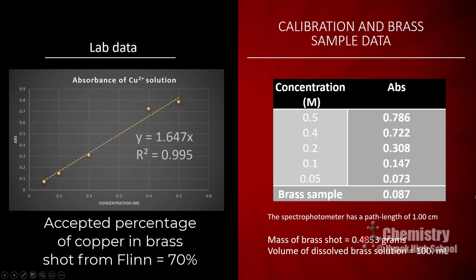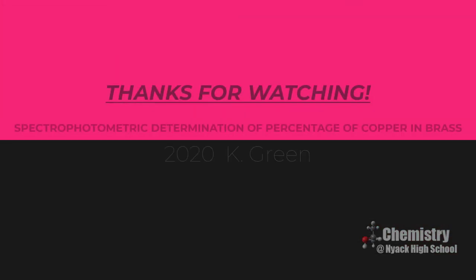On the screen is all the data you'll need to calculate the percentage of copper in your brass sample. The calibration curve is shown with the corresponding equation of the line. The mass of the brass sample is given at 0.4853 grams, the absorbance of the brass sample is shown, and the volume of the dissolved brass solution is given at 100 milliliters. Using this information, you should be able to determine the percentage of copper in your sample.